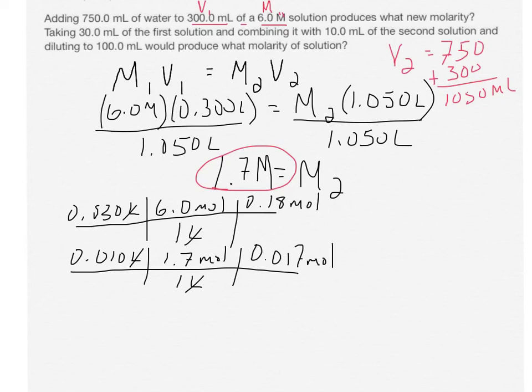That's the total number of moles that we're going to be putting into the final solution. So what we want to do is we want to add them together. So we have 0.197 moles that we'll be adding to our final solution.